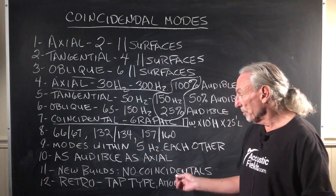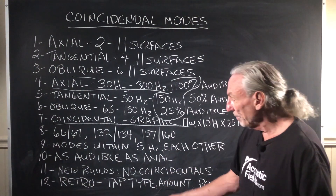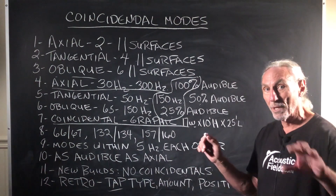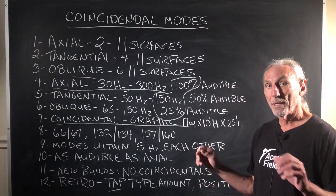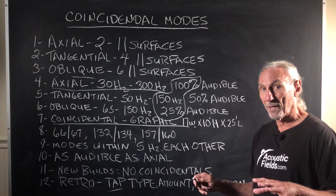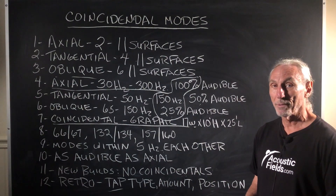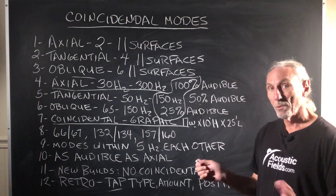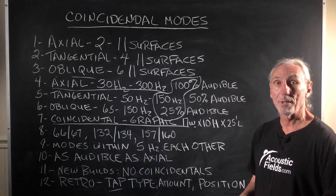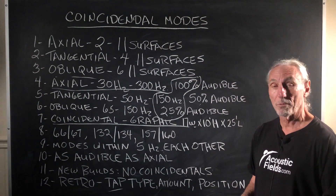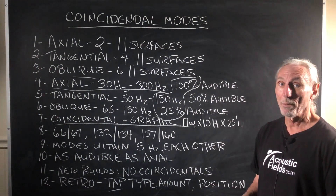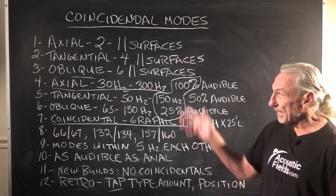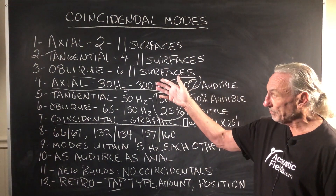So for new builds: no coincidentals. If we're doing retro, map them out in position. Find out where they are, how bad they are, and apply the correct treatment in that position. Coincidental modes are just another mode that we have to think about. But this is how we have to break it down — this is how we have to look at it.